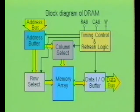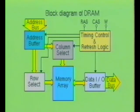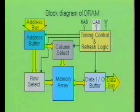Here you see a block diagram of the internal structure of a dynamic RAM device. It looks quite similar to the other memory devices already discussed. The primary difference in this device is its timing control and refresh logic control section. There are three control inputs in this section: one labeled RAS for row address strobe, one labeled CAS for column address strobe, and the third labeled W for write enable.